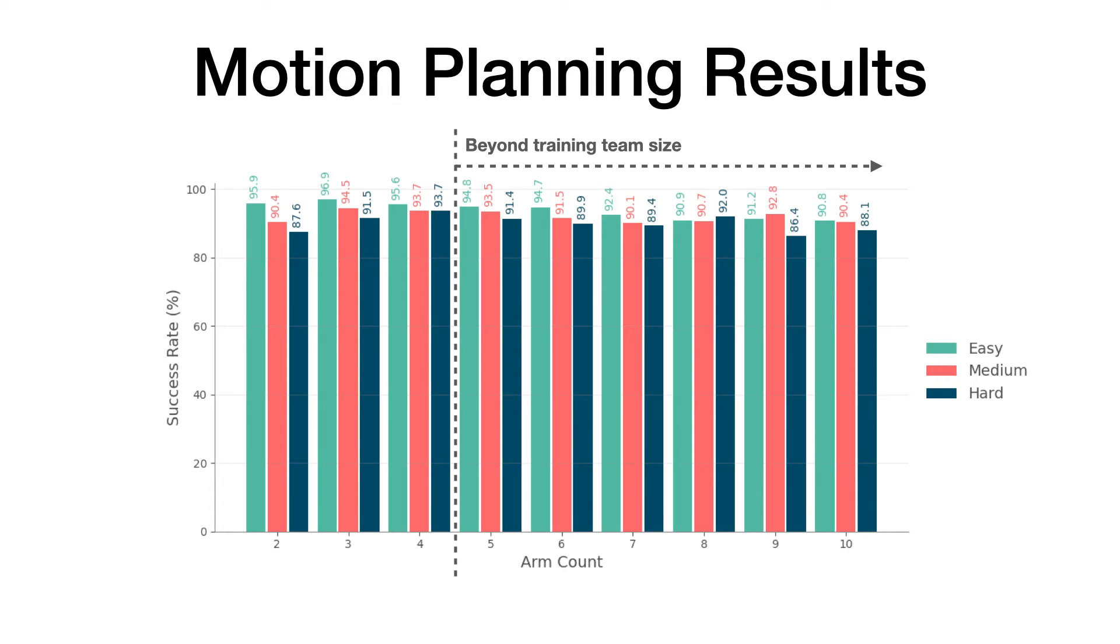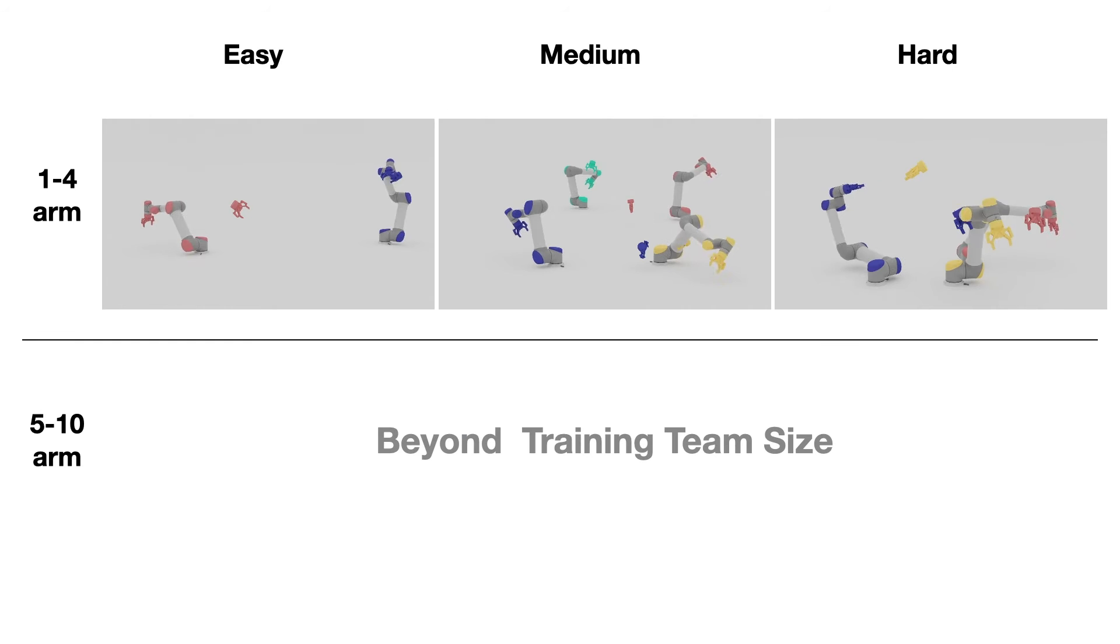Our final policy is able to maintain high performance for easy, medium, and hard tasks as the number of arms scales, where different difficulty levels measure how tight the workspace is. Now, we show some results at these difficulty levels.